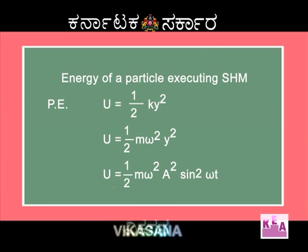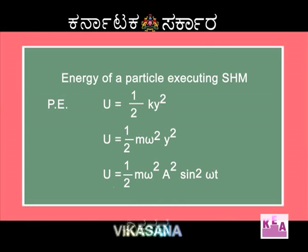You must remember this expression k = m omega squared. Therefore, potential energy is equal to half m omega squared into y squared, and in place of y you can put A sin(omega t). Therefore, the potential energy expression is U = half m omega squared A squared sin squared(omega t).